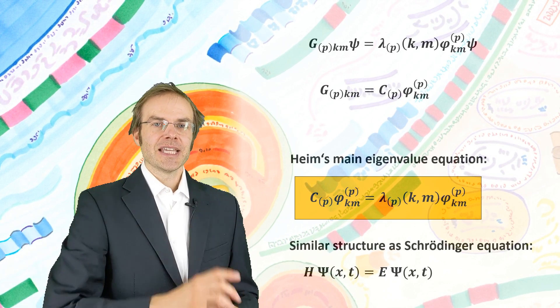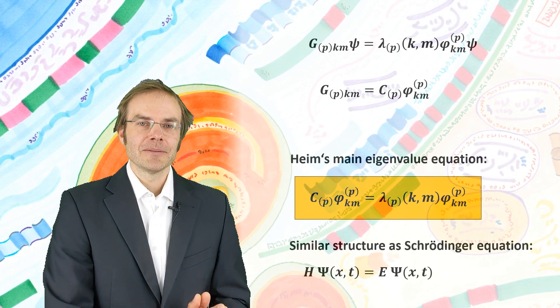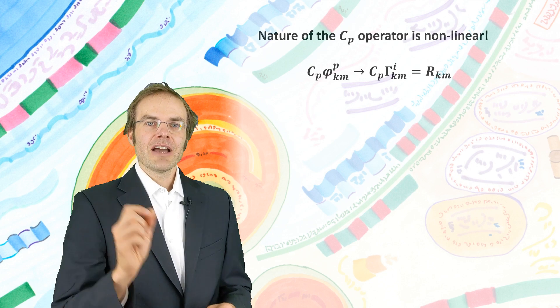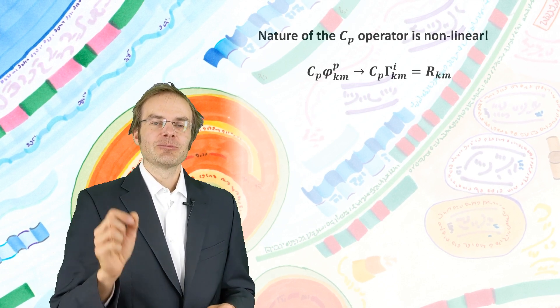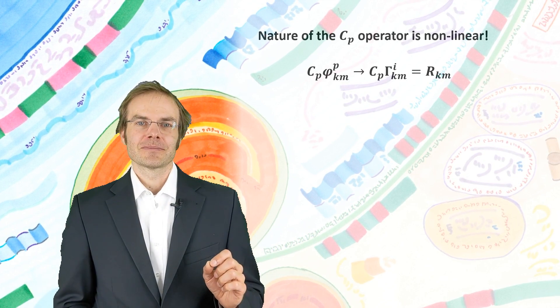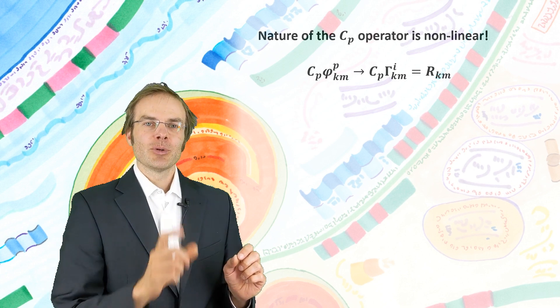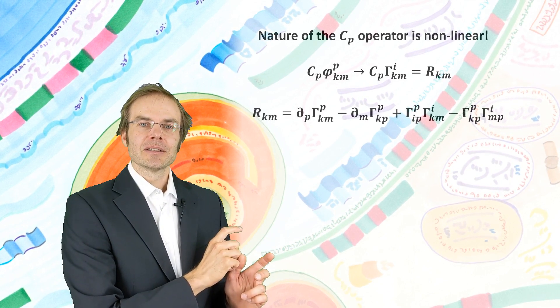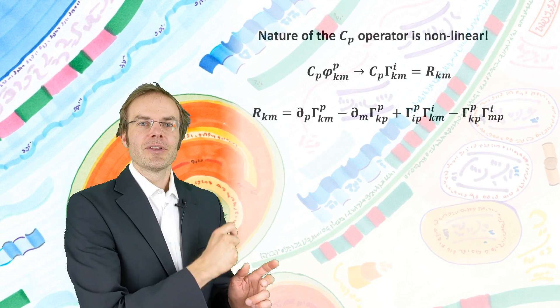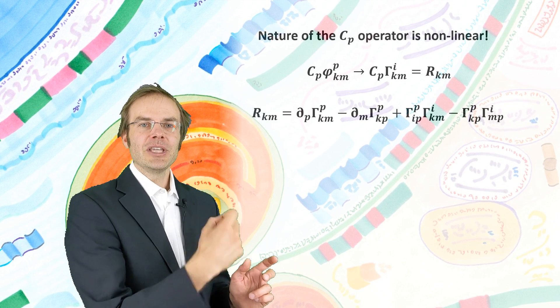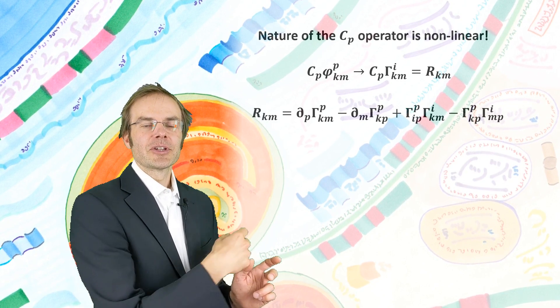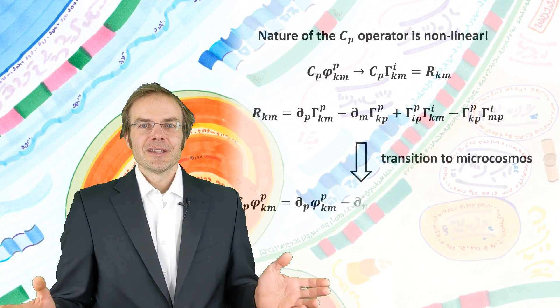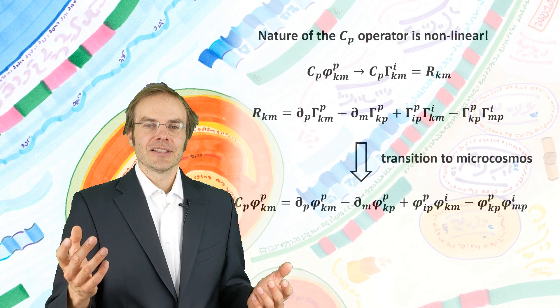But the similarity ends here. Because our cp operator on the left hand side of the Heim equation is a non-linear one, the Hamiltonian operator is linear, and therefore the psi's can be interpreted as probability states which can linearly superimpose. Remember how we defined the cp operator. It was defined from this relation, known from general relativity, where the Ricci tensors, the reduction of the Riemann tensor, is deducted by cp from the three-pointer symbols, from the Christoffel symbols in the macrocosmos. And this was transitioned into the microcosmos in a very similar way. And you cannot superimpose, you cannot add up simply these non-linear relations.